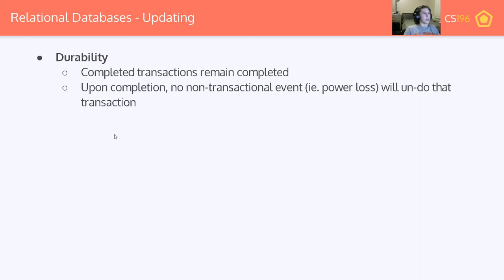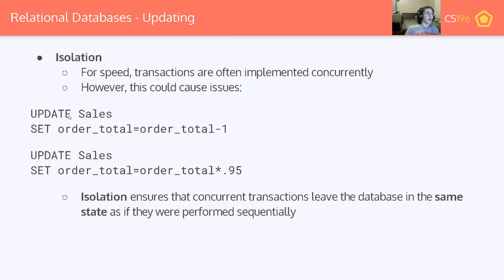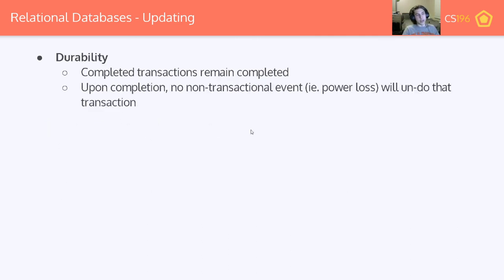Durability is by far the easiest to understand: once you've completed a transaction, it remains completed. If you complete a transaction and then your computer shuts off, as long as the transaction was fully completed — hence atomicity — it will remain completed. No non-transactional event will undo that transaction. You can undo a query by running another query that reverses it, but we still treat those as two separate durably completed transactions.